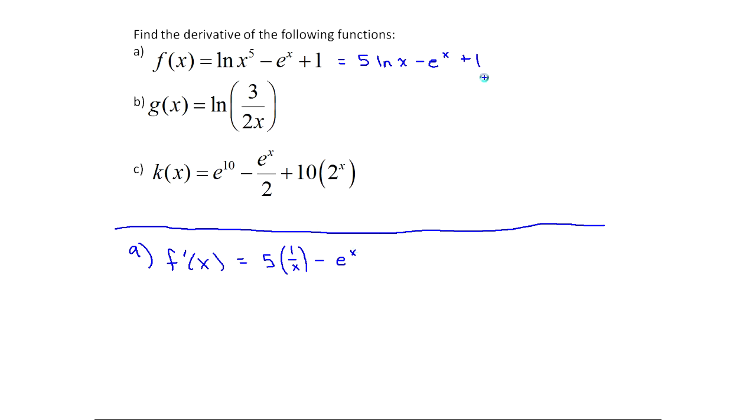And then plus the derivative of 1, but the derivative of 1 is zero because it's a constant. So I got my f prime essentially in one step. It was one calculus step, but we had to do a little bit of algebra up here.